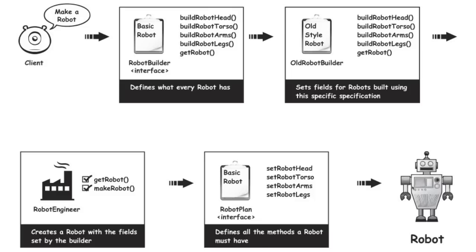What the Old Robot Builder does is set all the specifics for making a very specific robot type. Here is the final robot, and it's going to have a whole bunch of fields. This builder is going to set the values for those fields whenever BuildRobotHead, BuildRobotTorso, and so forth are called. GetRobot is going to return this robot to whoever calls it, mainly the alien. Then we have the Robot Engineer, often called the Director. It creates a robot using the fields set by the builder. Finally, we have our interface with all the set methods to set values for our robot, and the final robot itself. Now we're going to go from this diagram and build all the code.